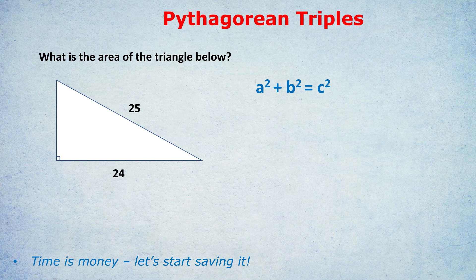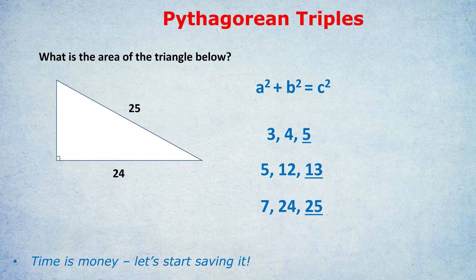If we could save that time and get the answer in three seconds, wouldn't that be amazing? 30 to 40 seconds saved is maybe one more correct answer later in the test. As I've said, time is money, so let's start saving it. Here are the triples: 3-4-5, 5-12-13, and 7-24-25. I've underlined the hypotenuse in each. There are more triples in existence, but these are the only three I've ever seen tested on the GRE or GMAT.